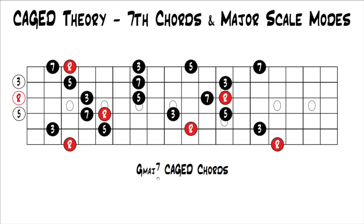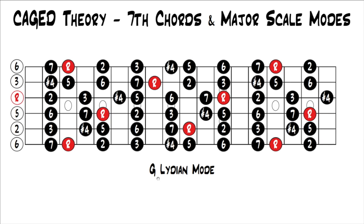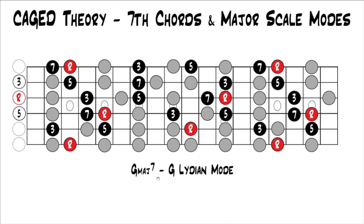Major seven works with more than just the Ionian mode — it also works with the Lydian mode. Here are the major seven chords again. If we put the Lydian mode on the screen, you can see that all the major seven cage chord shapes still fit within the Lydian mode. So again, you could play these chords and then use all these extra notes if you wanted to play in the Lydian mode to throw in little fills and licks.